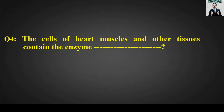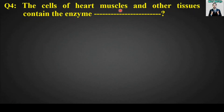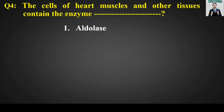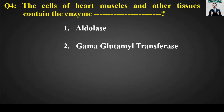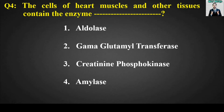MCQ number four: The cells of heart muscles and other tissues contain the enzyme blank. Options are: aldolase; gamma glutamyl transferase; creatinine phosphokinase; amylase. The right answer is option number three — creatinine phosphokinase.